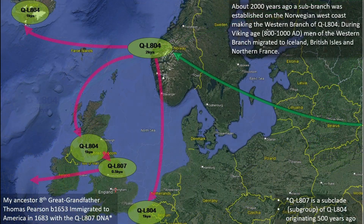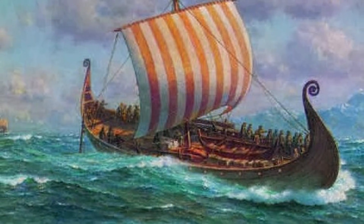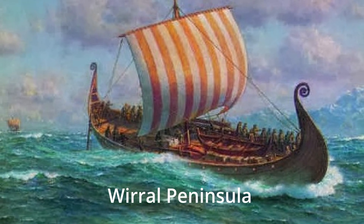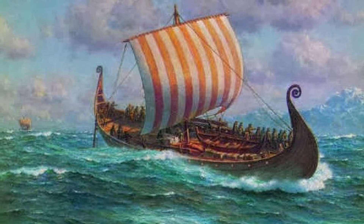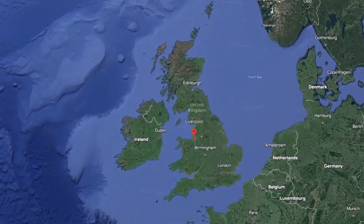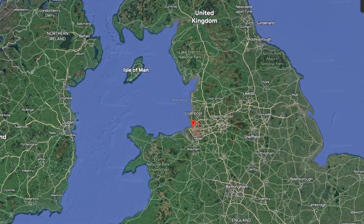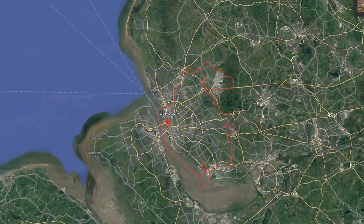The QL804 Y DNA became part of the Viking and Danish population. During the 8th, 9th, and 10th century, Vikings from Norway set sail in their longboats to Iceland, Ireland, England, and France, carrying with them the QL804 DNA as they searched for new lands to settle and farm. In 902 AD, a group of Vikings from Norway made their way to the Wirral Peninsula, situated in the present-day location of Liverpool, England. This Viking expedition is believed to be the primary means through which the QL804 haplogroup found its way to England.